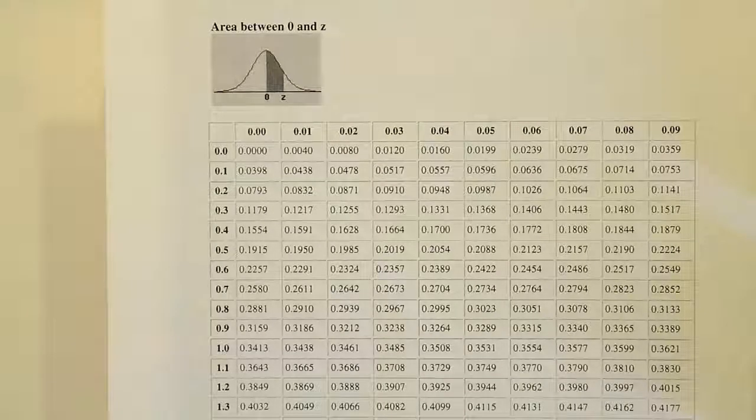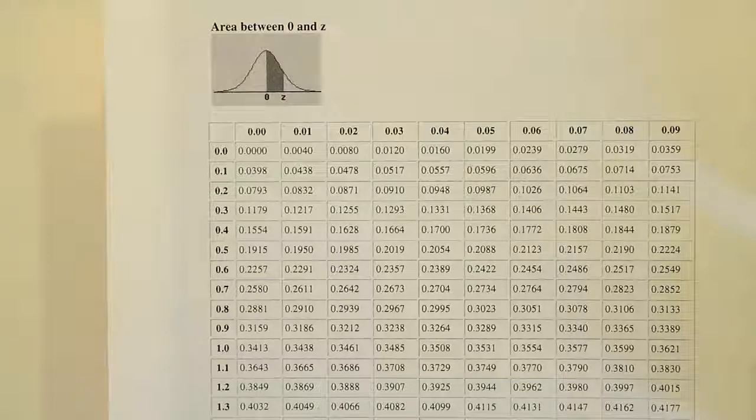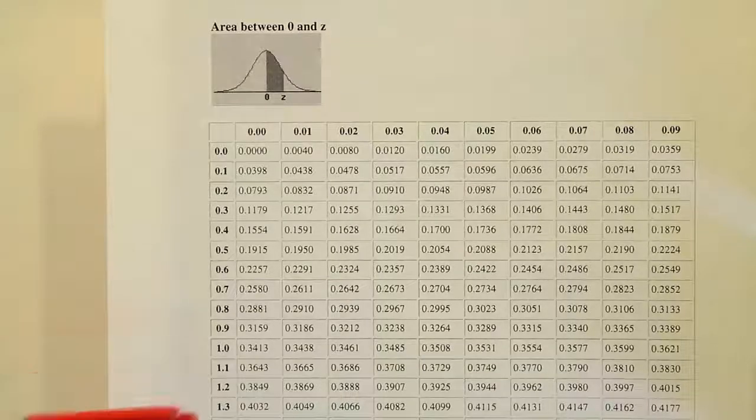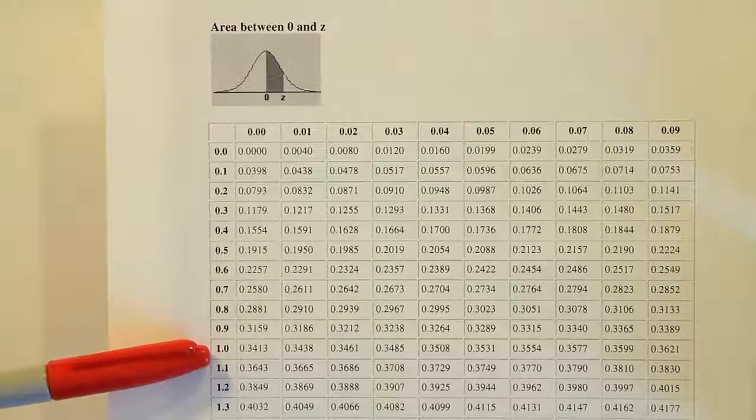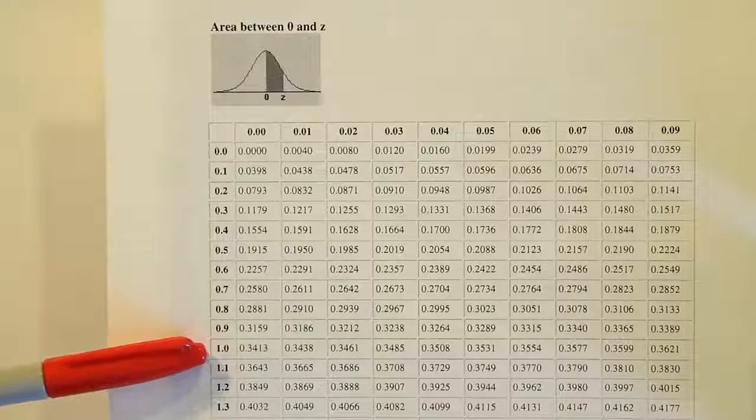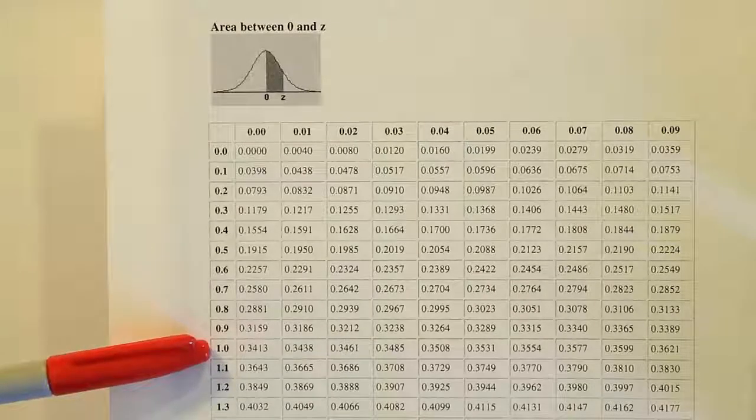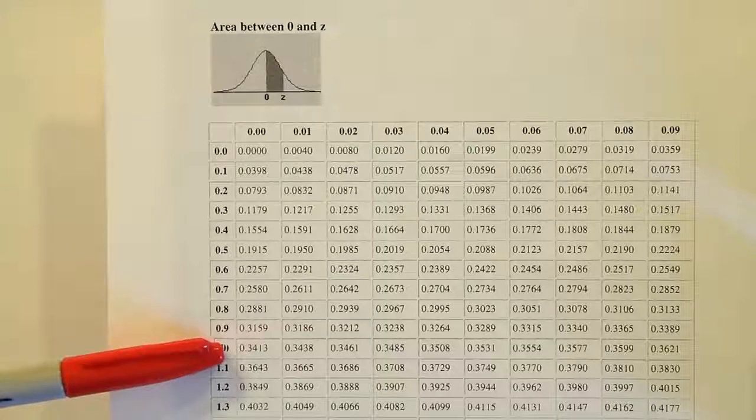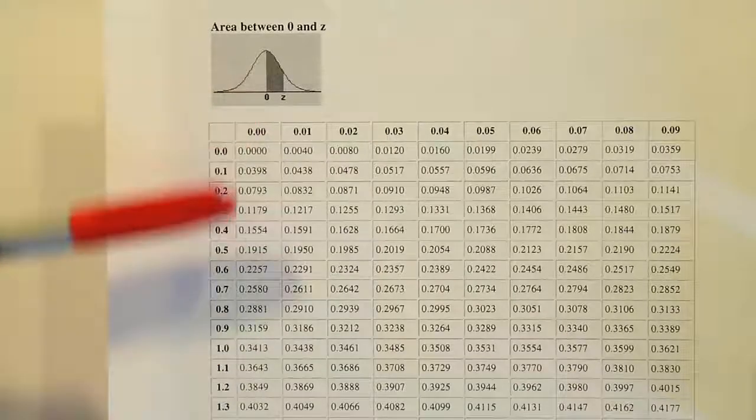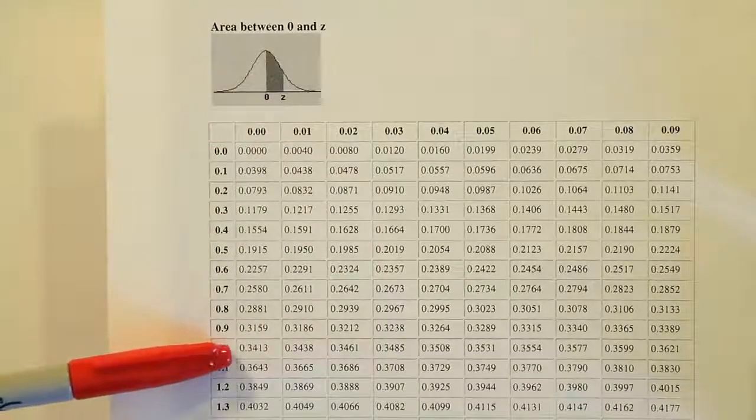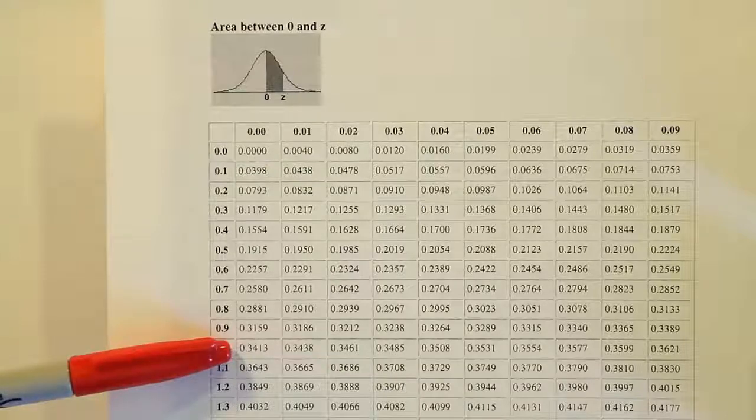So if we look up negative 1, we can just do that by looking up 1.0. So there's no reason to look up a negative value when the positive value is the same exact answer. So if I come here to where it says 1.0 and I look at the number in the first position after, which is the 0 position, it'll be 1.00, which is .3413.